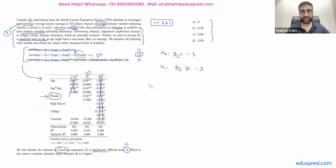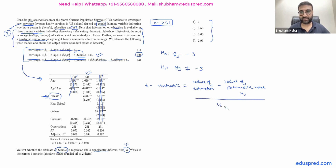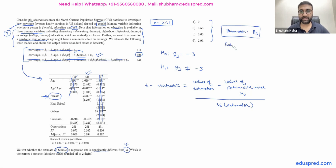Now we have to find the value of the t-statistic. The general formula is: the value of the estimator minus the value of the parameter under the null hypothesis, divided by the standard error of the estimator. The parameter we are working with is beta three, so the estimator notation is beta three hat.